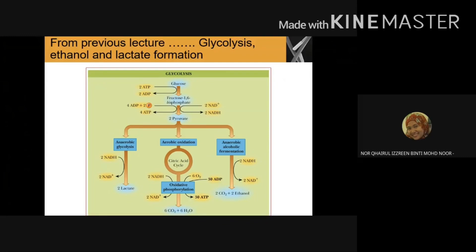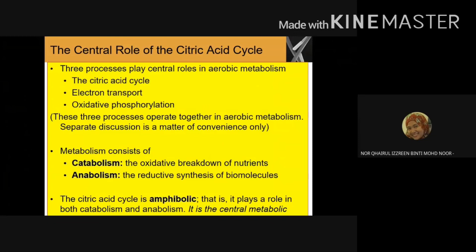This step happens before the TCA cycle: glucose is oxidized to pyruvate, which enters the mitochondria and undergoes decarboxylation to form acetyl-CoA. In this process, it releases one carbon dioxide and two electrons.